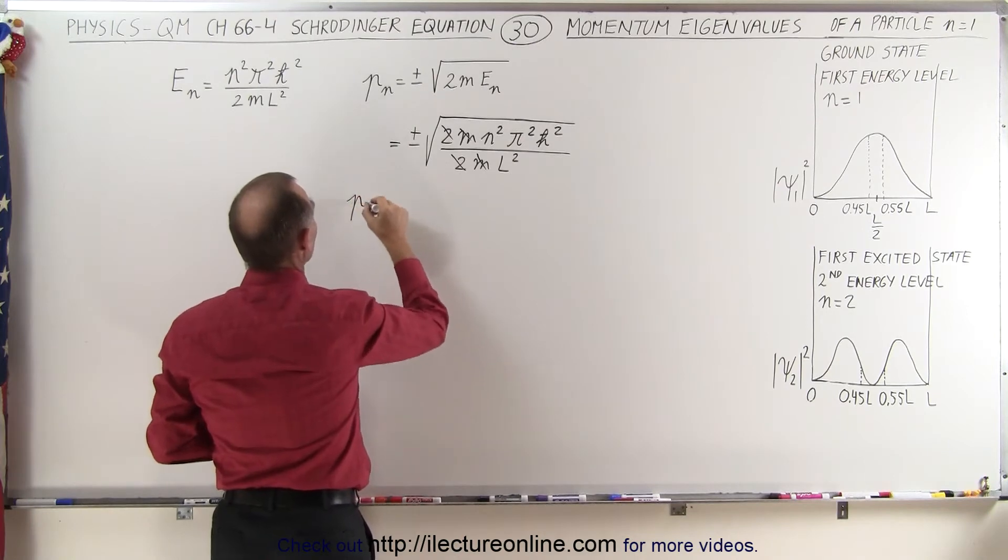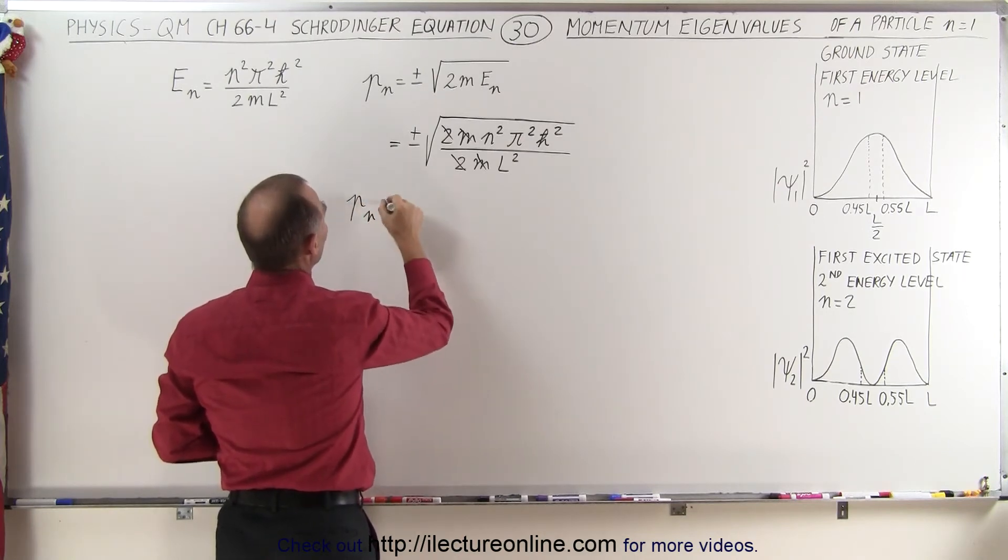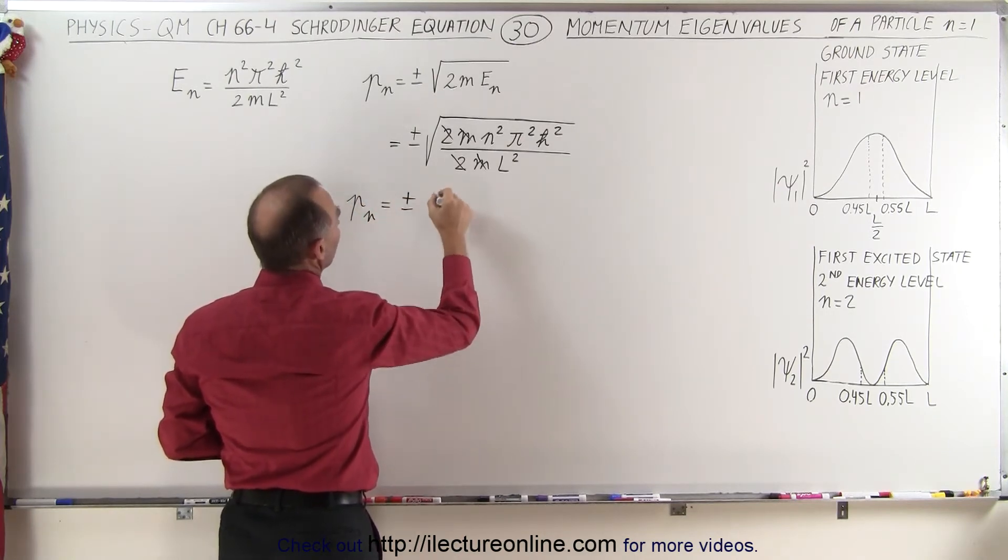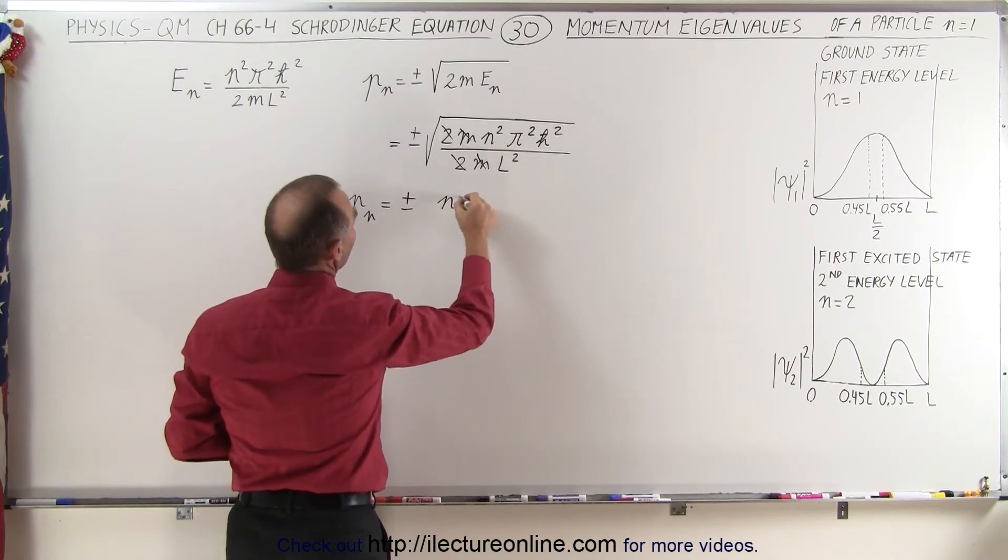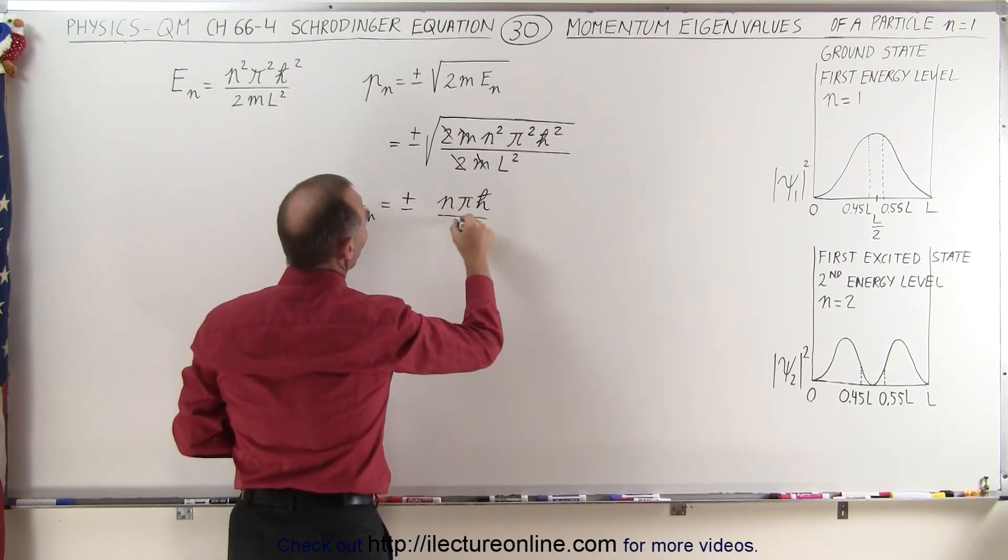So we can simply take it out of the square root sign so we can say that momentum for all the energy levels n is going to be equal to plus or minus n pi h-bar over l.